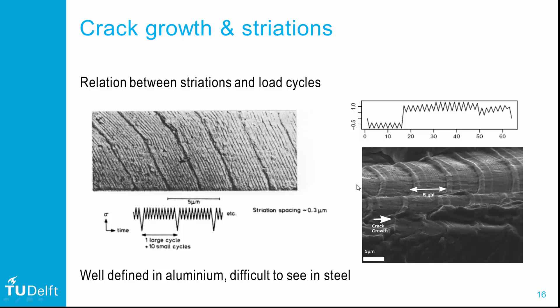Depending on the load sequence, the formation of striations may come together with stepping up and stepping down on the fracture surface. In general, striations are fairly well visible in aluminium, but very difficult to see in steels or titanium.